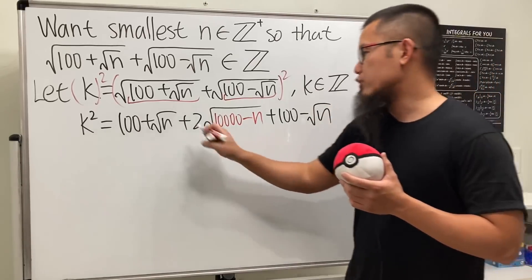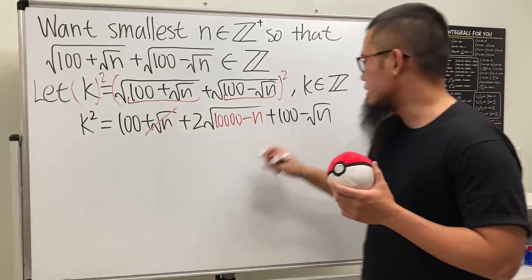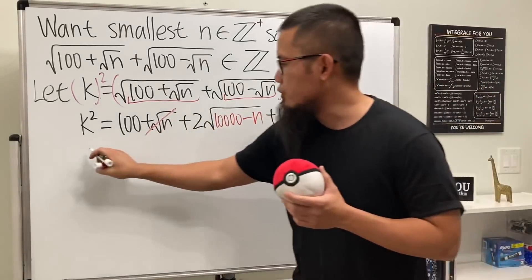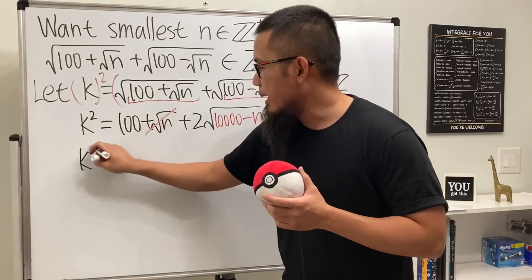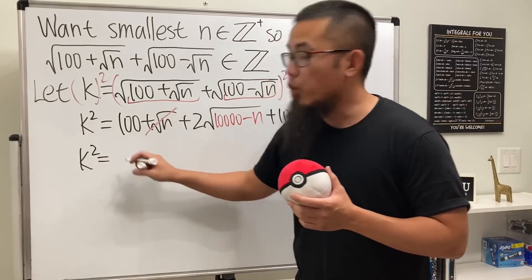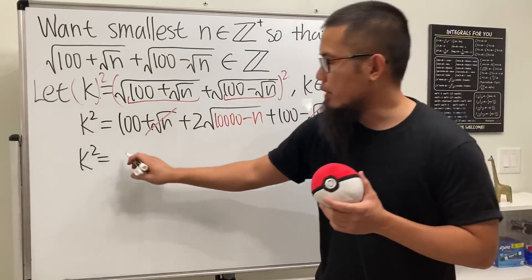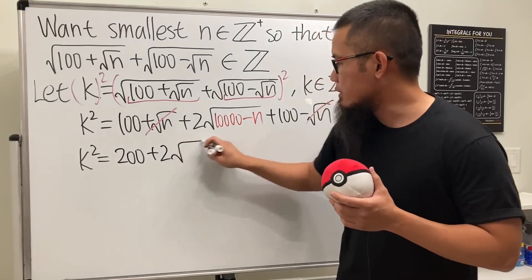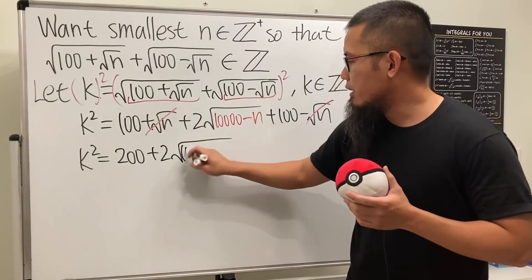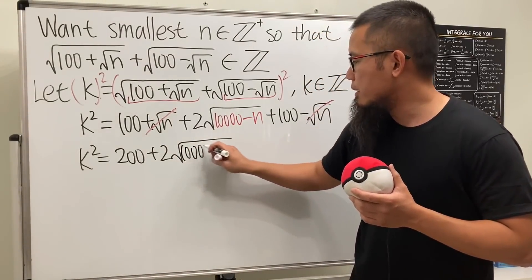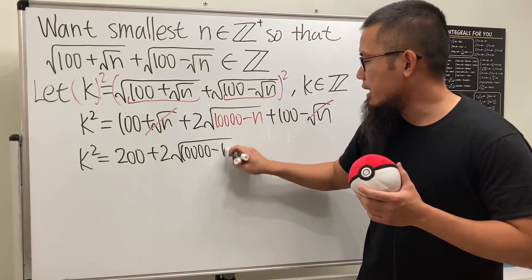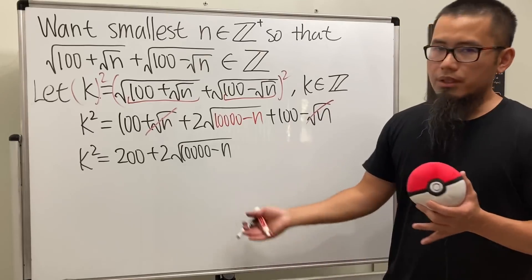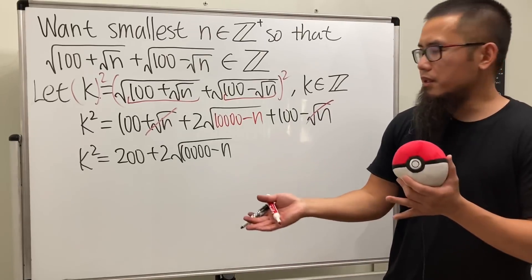This is actually pretty nice because the square root terms cancel and we can combine the hundreds. So k squared equals 200 plus 2 times the square root of (10,000 minus n). That looks pretty manageable now.